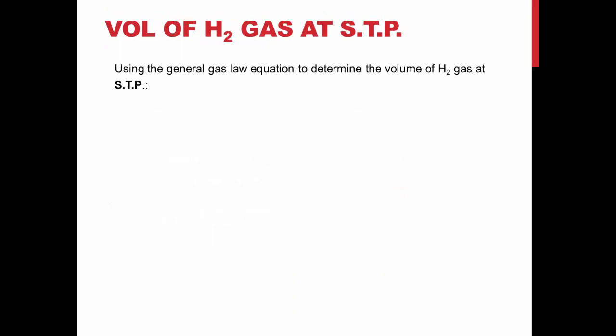From the experimental values of pressure, volume, temperature, and number of moles, you can calculate the value of R for your experiment. Moles of hydrogen gas formed during the reaction can be calculated using the equation of the reaction and mass of the magnesium used for a given trial. Be careful to use correct stoichiometric ratios when converting moles of magnesium to moles of hydrogen.